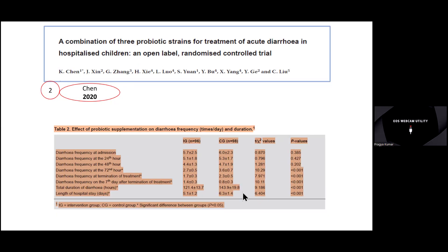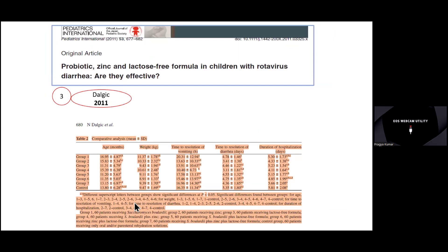In the Dajit study, they have taken age, weight, time to resolution of diarrhea, and duration of hospitalization. Group one is Saccharomyces boulardii, group two is zinc, group three is lactose-free formula, group four is Saccharomyces boulardii plus zinc. So I have to see group one. The time to resolution of diarrhea is 4.7 and 5.3, and the control is 5.31 and 5.81. We want to see only Saccharomyces — the probiotic — against ORS or placebo, so I'm not taking the other groups like boulardii plus lactose-free or boulardii plus zinc.